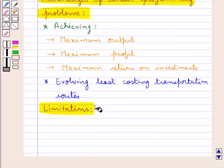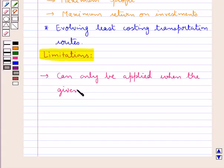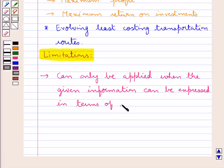Next we discuss the limitations of the linear programming problems. Linear programming can only be applied when the given information can be expressed in terms of linear equations or inequations. There are several situations in real life when it is not always possible to express the information in the form of linear equations or linear inequations. So in that case linear programming cannot be applied.